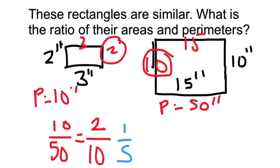Now let's look at the ratio for the areas. The area of the small rectangle is 6 inches squared. The area of the large rectangle is 150 inches squared.